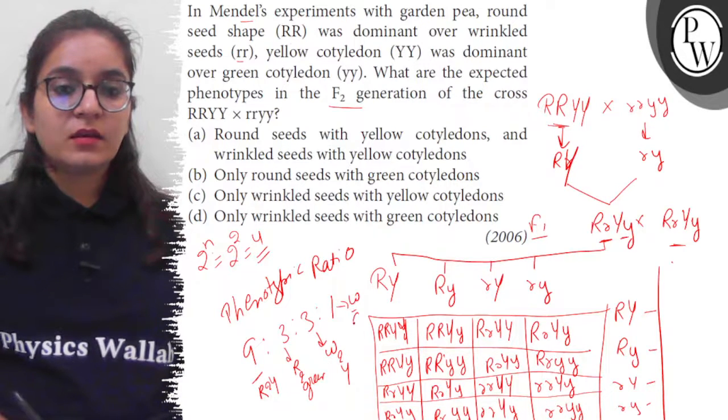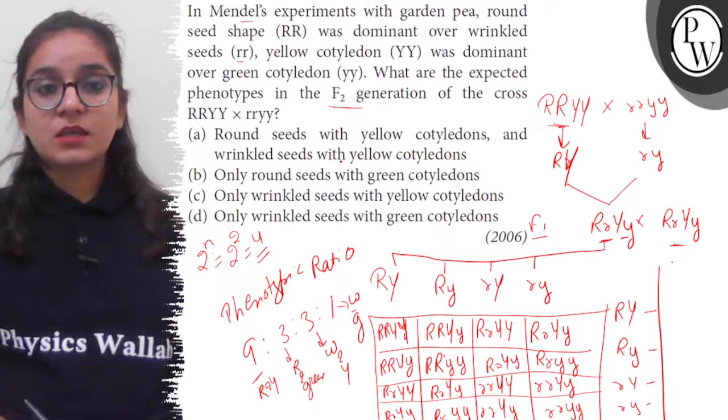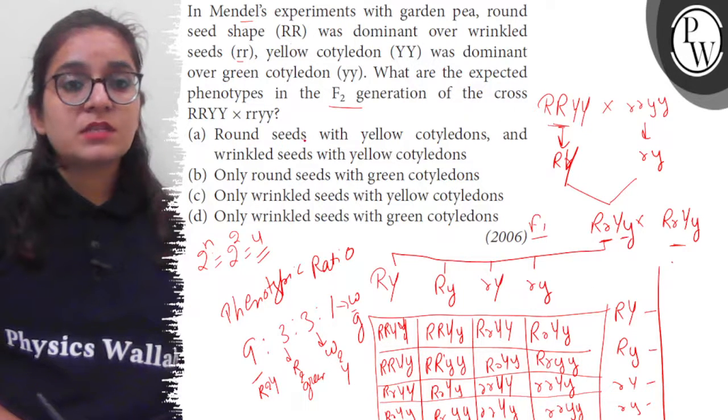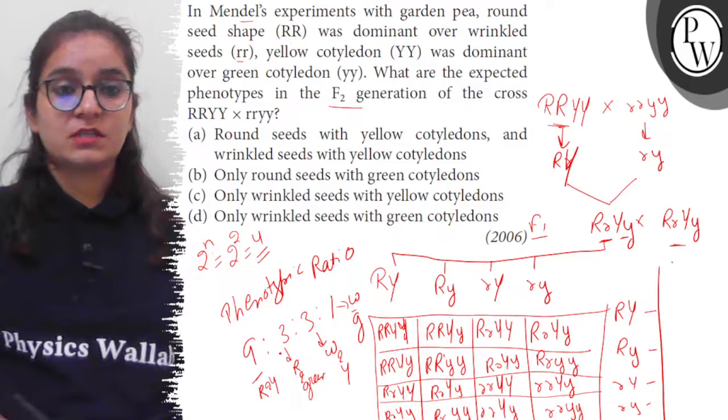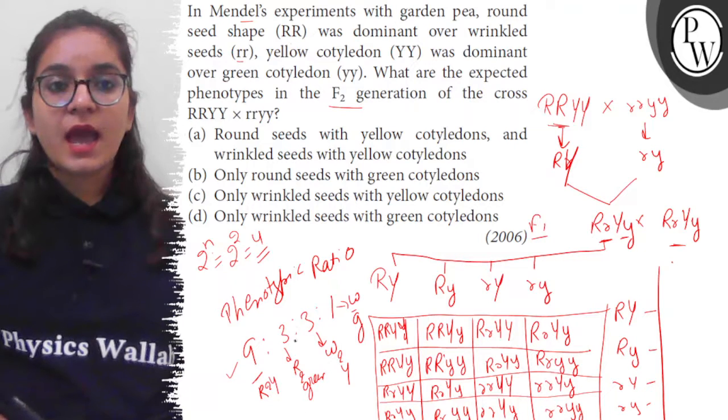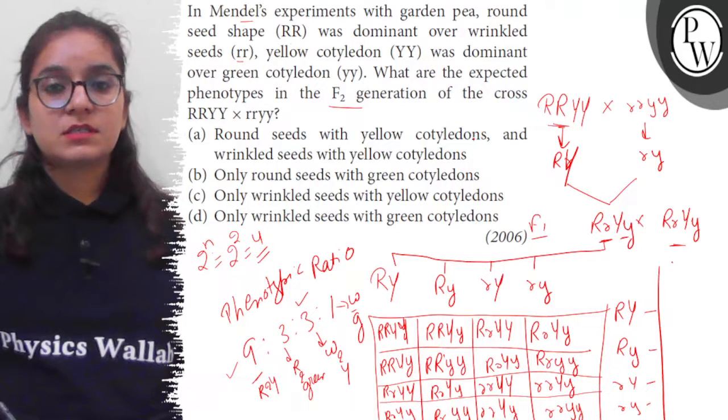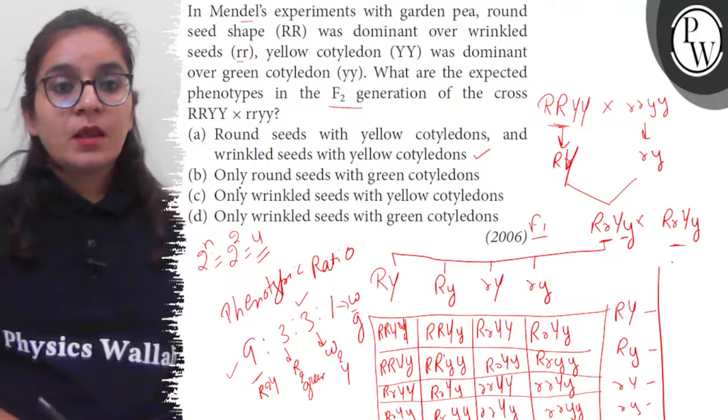Option A says: round seeds with yellow cotyledon and wrinkled seeds with yellow cotyledon are produced. Yes. Round seeds with yellow cotyledon are 9 out of 16, and wrinkled seeds with yellow cotyledon are 3 out of 16. So this is correct.